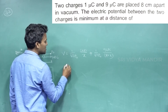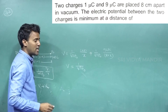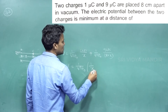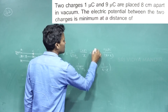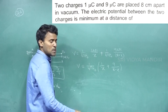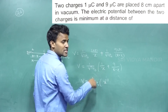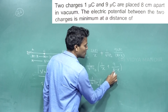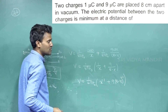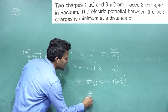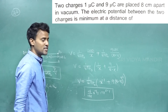Taking the common factor, V equals (1/4πε₀) multiplied by [1/X plus 9/(8 minus X)], where both charges are in micro coulombs. Rewriting using negative powers: V equals (1/4πε₀)[X⁻¹ plus 9(8 minus X)⁻¹]. The differentiation formula is d/dX of Xⁿ = n·X^(n-1).